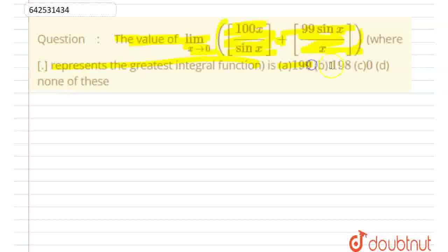Option a is 199, option b is 198, option c is 0, option d is none. We need to find the limit of this.